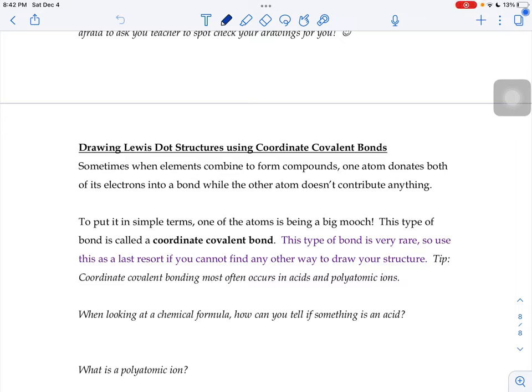The last type of structure that we're going to learn how to draw is something called a coordinate covalent bond. Sometimes when elements combine to form compounds, one atom donates both of its electrons into a bond while the other atom doesn't contribute anything.